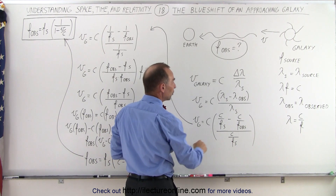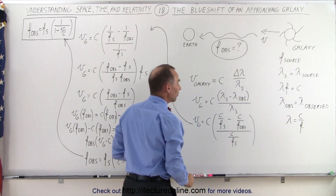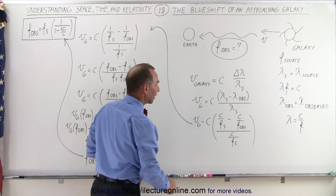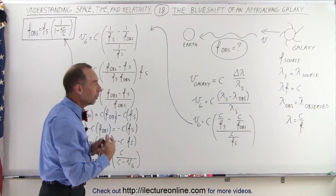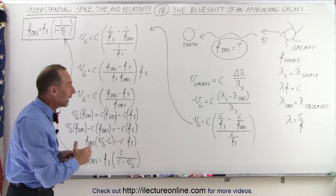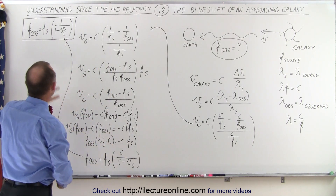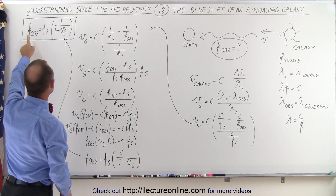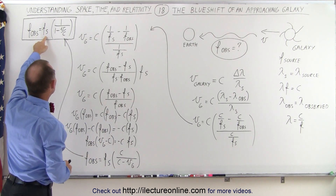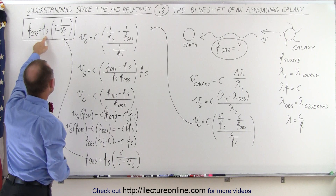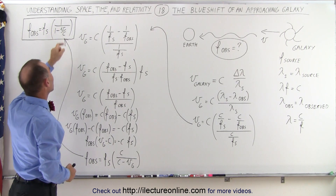Then what we do is replace the wavelength by the speed of light divided by the frequency. S means source, F-OBS means observed. And then if we manipulate that algebraically, we end up with the equation where the frequency observed — the light reaching us — is equal to the frequency of the source times the quantity 1 over (1 minus V over C).